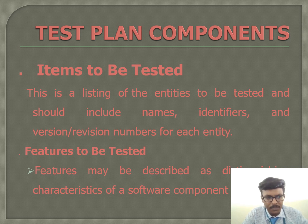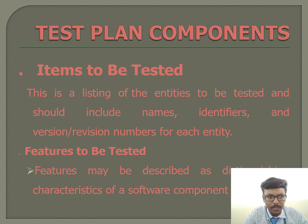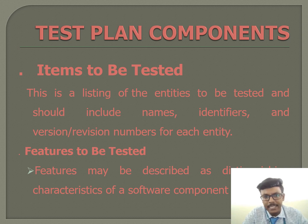Next are features to be tested. Features may be described as distinguishing characteristics of a software component or system. Features that will not be tested should be identified and the reasons for their exclusion from tests should be included. References to test design specifications for each feature and each combination of features should be identified — documenting the entire thing is very important.